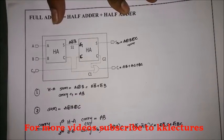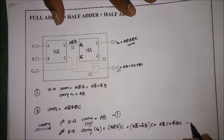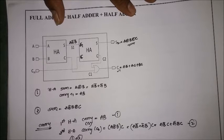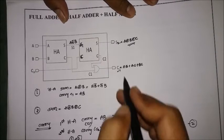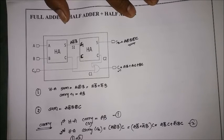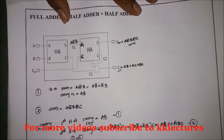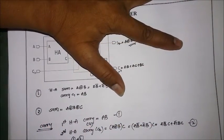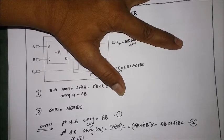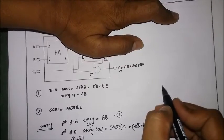Adding the two carries C1 and C2, the full carry C equals AB + AB̄C + ĀBC. Since I want the carry as AB + AC + BC, I can expand AB as AB(C + C̄), giving ABC + ABC̄. So the full expression becomes ABC + ABC̄ + AB̄C + ĀBC. I will now put this into a K-map.